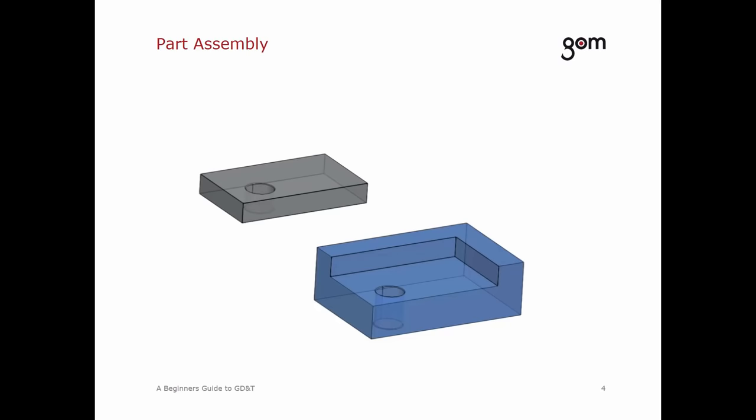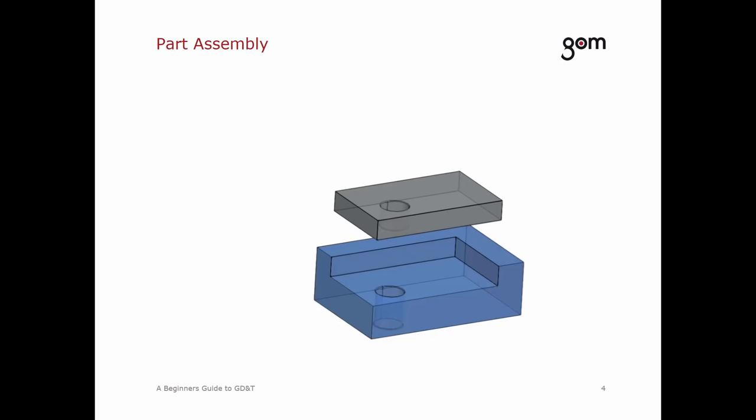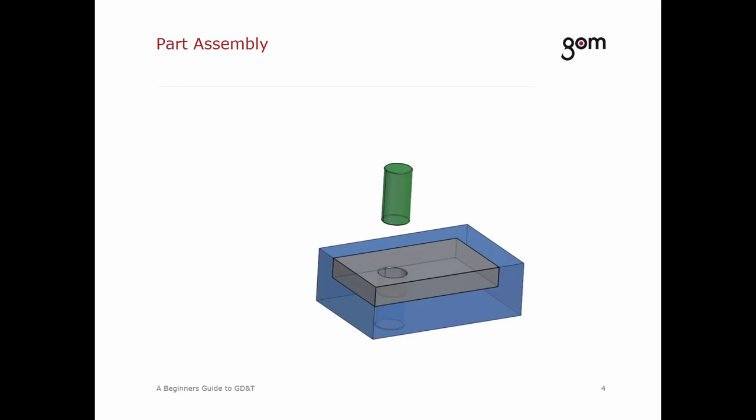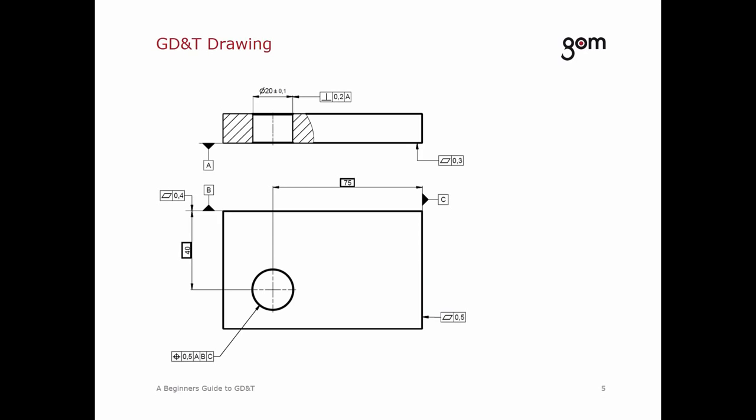Let's have a practical example on a part of an assembly. The whole point of GD&T is to focus on the function of the part. The part we will use today is the gray block, which shall be inserted into the blue block seamlessly — there should be no gaps between the two blocks. There is also a bolt that shall be inserted and should fit into the bottom and top block. I've described everything verbally, but let's use another language — GD&T. This drawing describes exactly what I've told you, but in symbolic language. The intention is to describe exactly how to manufacture and inspect the part without room for text descriptions, interpretations, or guesswork.